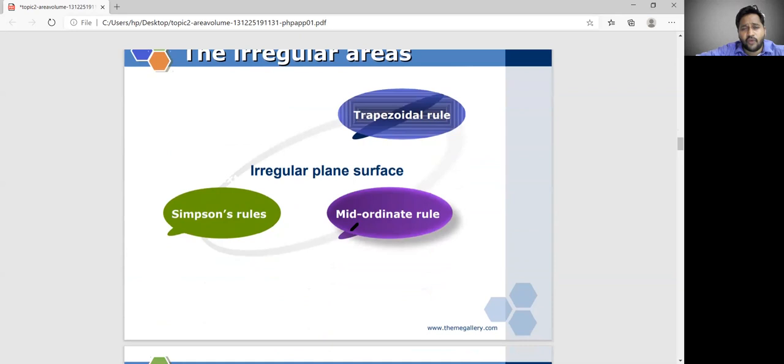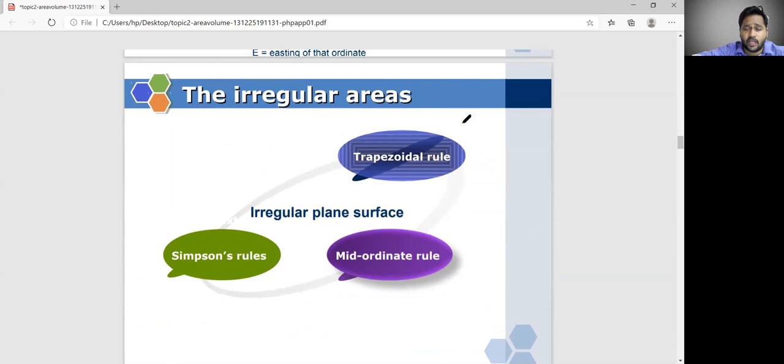If you want to find irregular areas, these methods are very very important. What I am going to discuss now, these methods are very very important. Most of your engineering works, areas and volumes will be calculated only based on these three methods only. One is first is mid ordinate rule, Simpson rule, trapezoidal rule. These three rules will be applicable for finding the areas of irregular areas. We will see one by one.